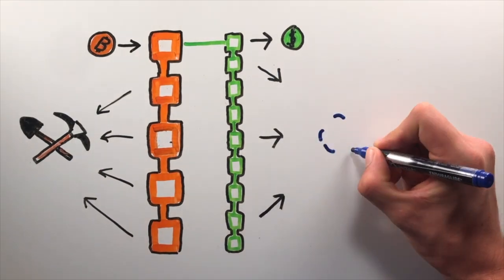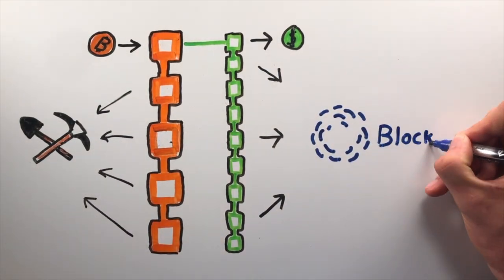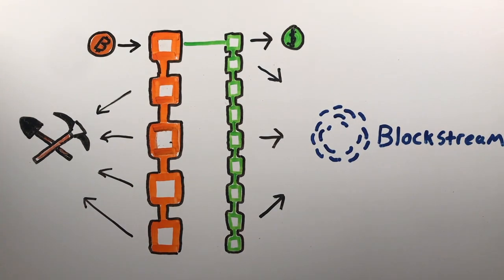But the key difference between sidechains and the Bitcoin blockchain is that transaction fees don't go to the miners. They go to the developers of the sidechains.